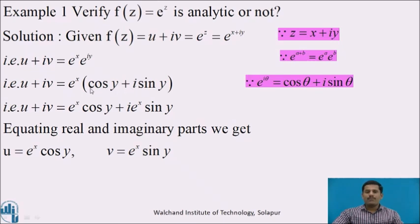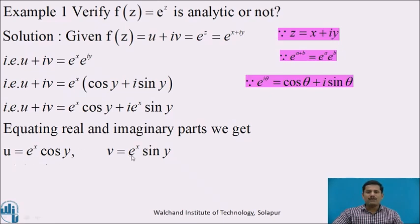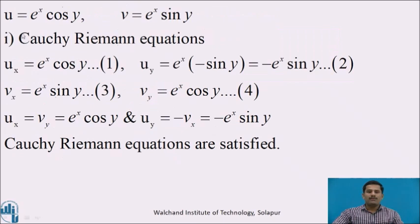Multiplying e^x into the bracket, we get e^x cos y + i · e^x sin y. Equating real and imaginary parts from both sides, we get u = e^x cos y and v = e^x sin y.